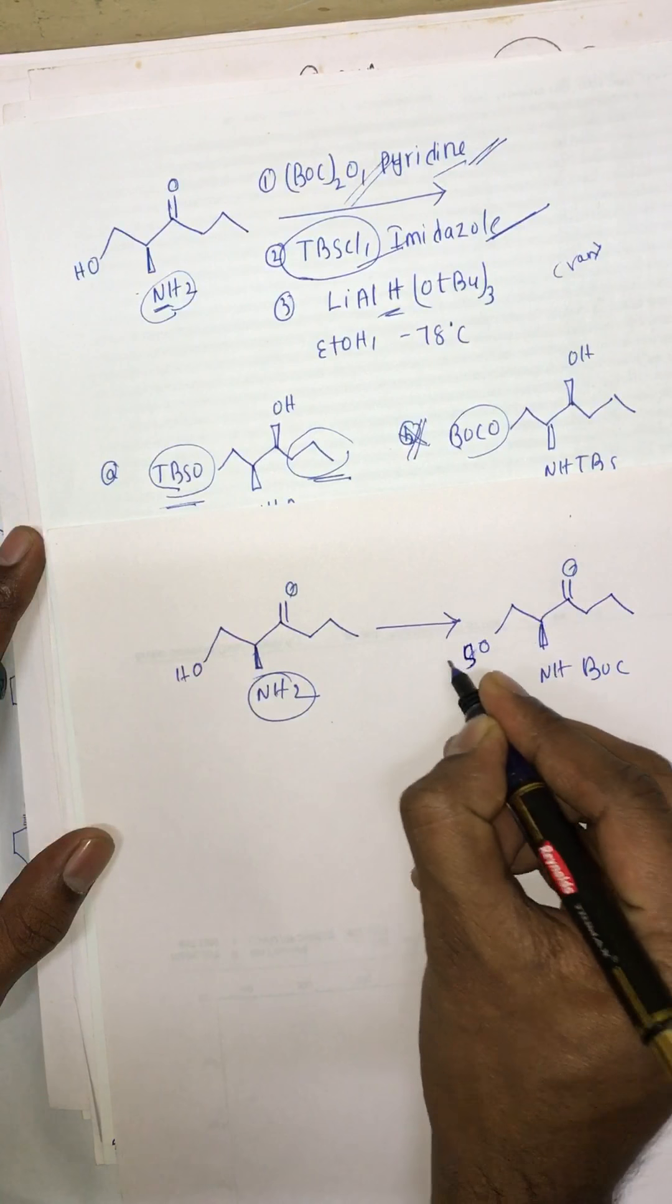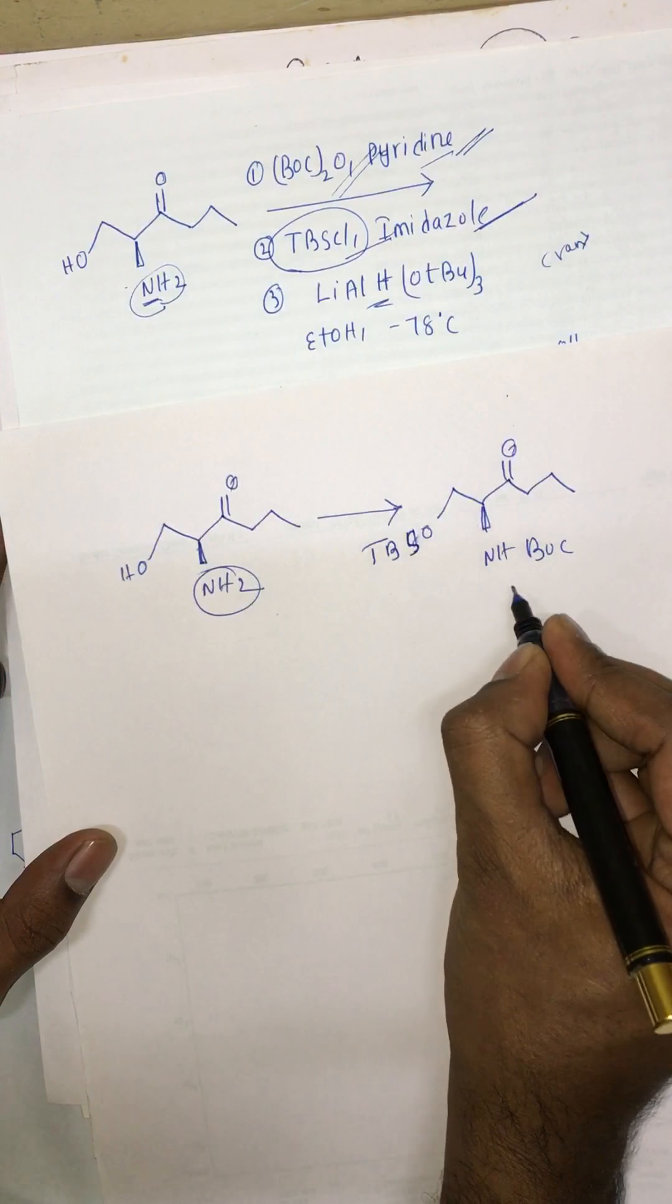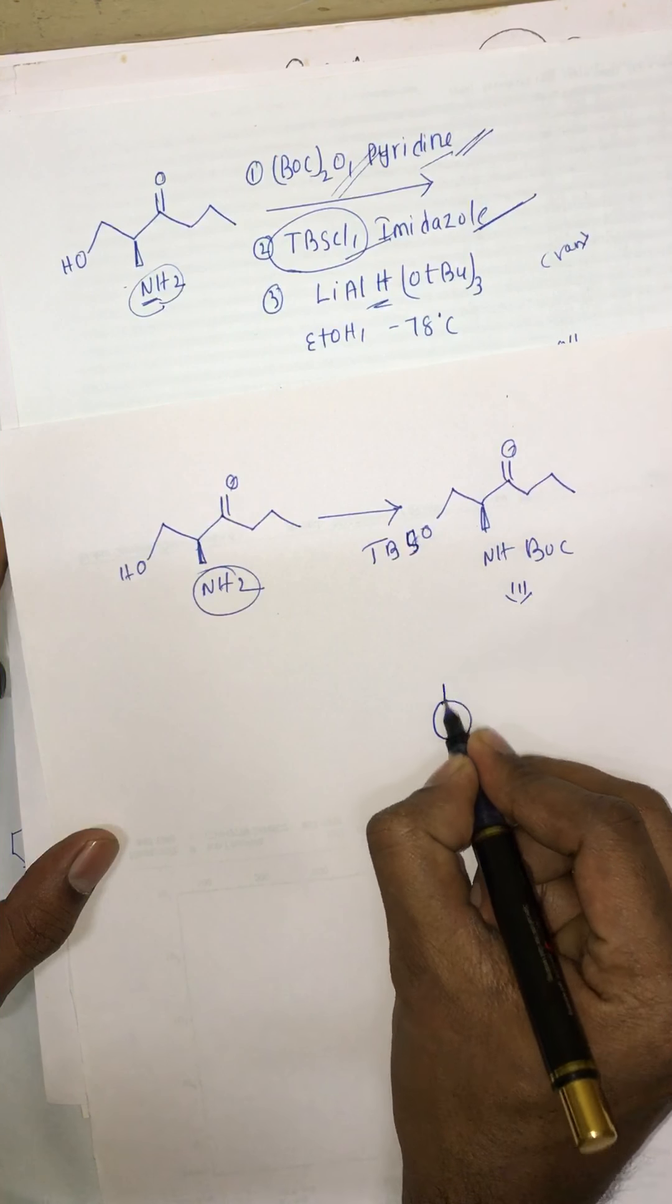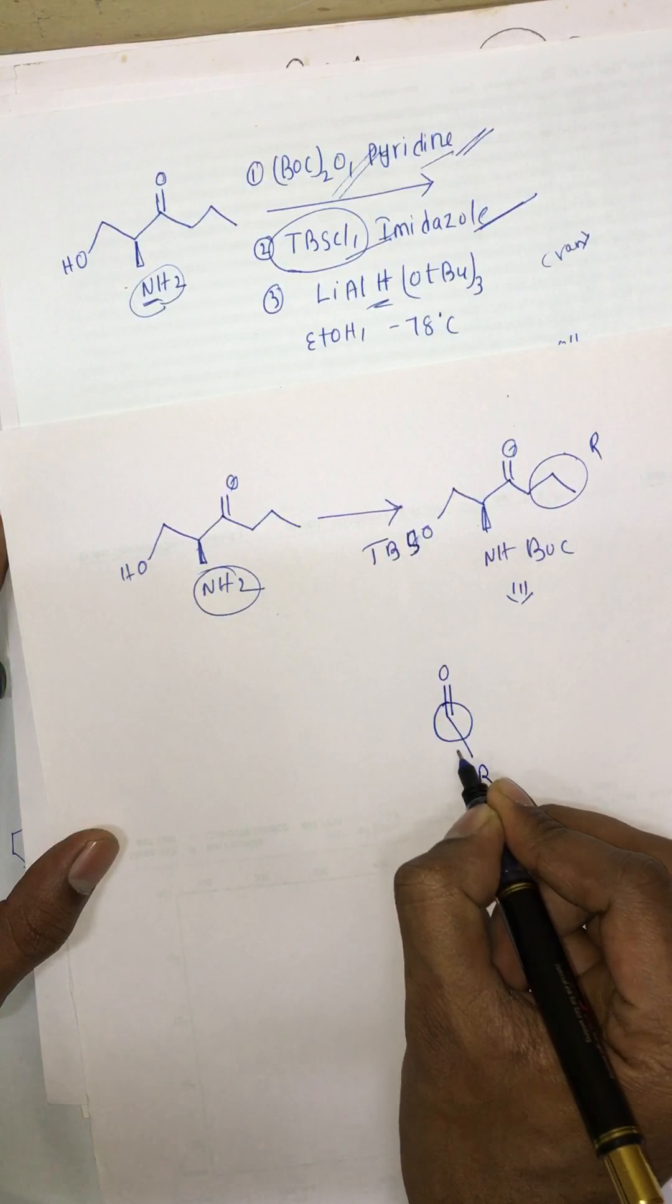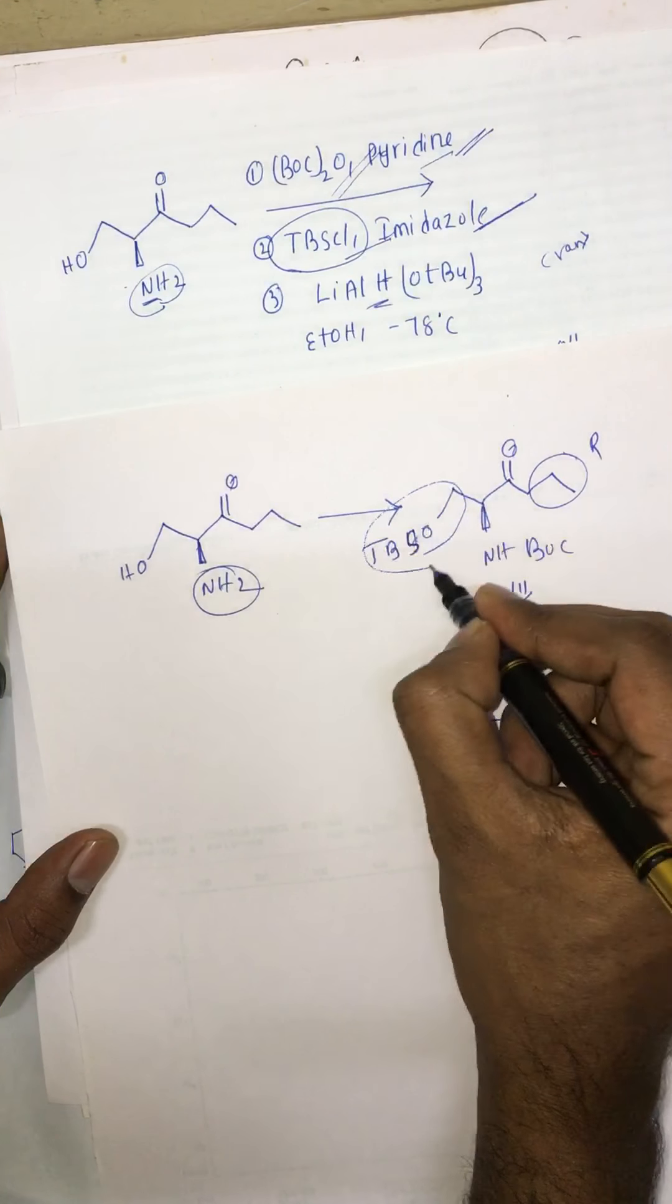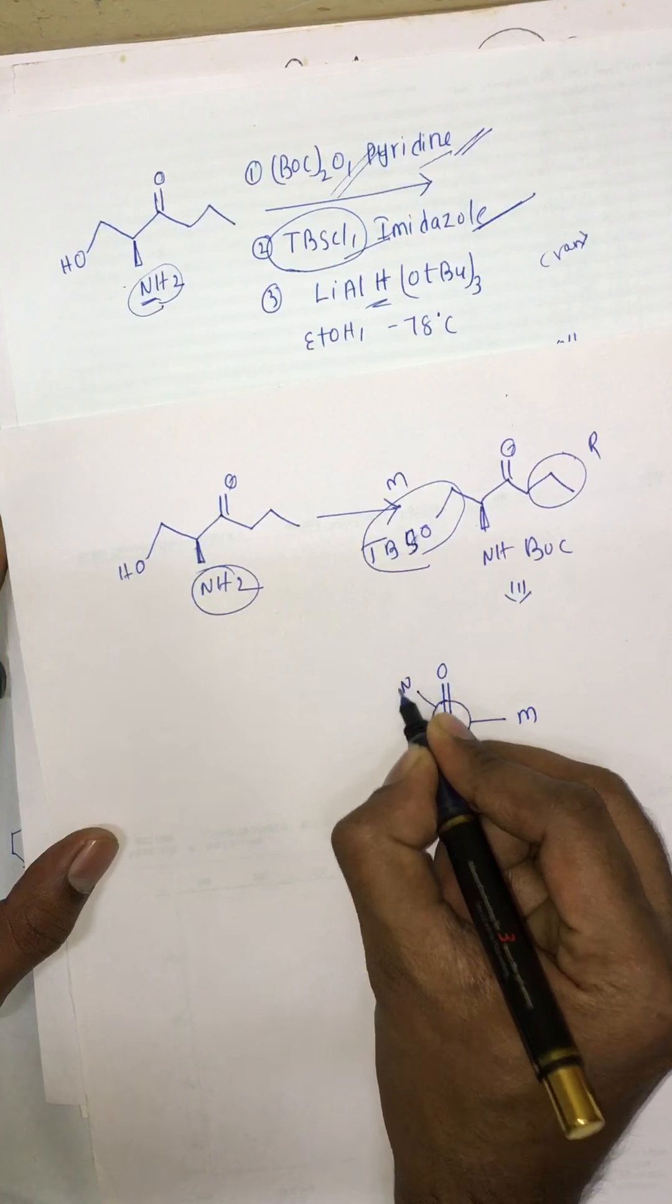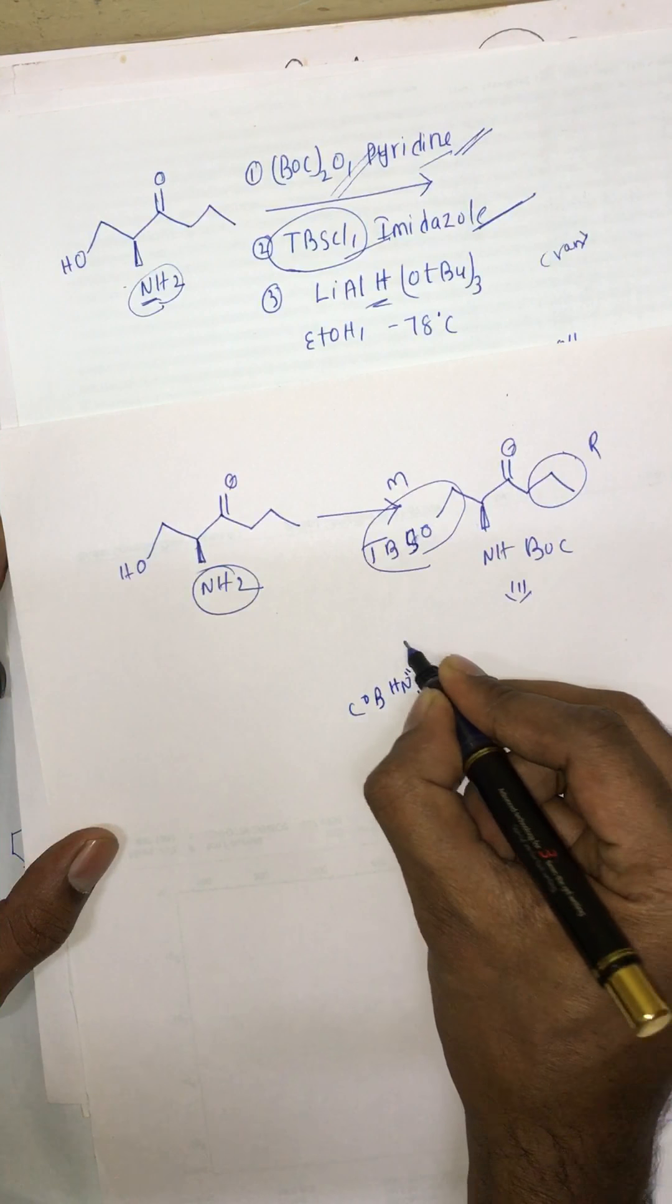it becomes OSBT. Now we will go for the Cram's chelate model. This group I take as R, the small group is hydrogen, here is the medium group, and here is NHBOC which has coordination with lithium.